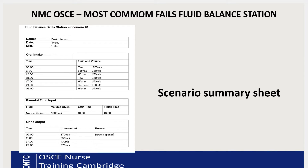I thought I'd do a video on the most common fails and give you my top tips so you don't end up making those mistakes. You will get a patient scenario sheet on screen which tells you the patient's name and details, their oral intake over the last 24 hours including what time they had drinks, and also the parenteral fluids — your IV fluids — for example, 1000ml of normal saline starting at 10:00 finishing at 18:00. It also tells you the urine output for that patient.